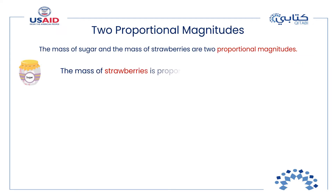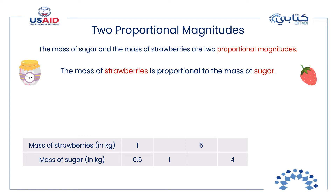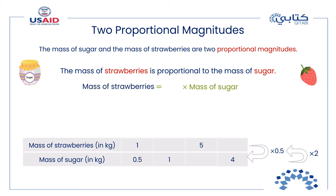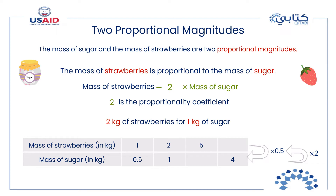Similarly, the mass of strawberries is proportional to the mass of sugar. To obtain the mass of sugar from the mass of strawberries, you multiply by 0.5. So to obtain the mass of strawberries from the mass of sugar, you divide by 0.5. Dividing by 0.5 is the same as multiplying by its reciprocal, which is 1 over 0.5, equal to 2. The mass of strawberries is proportional to the mass of sugar, and 2 is the proportionality coefficient — meaning two kilograms of strawberries are needed for one kilogram of sugar.